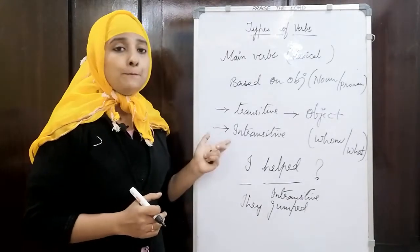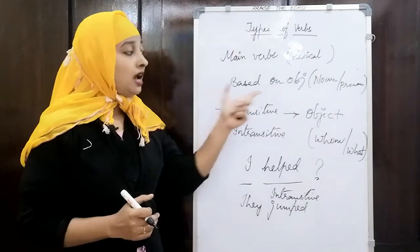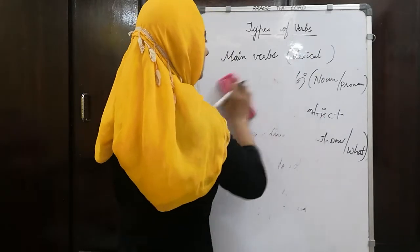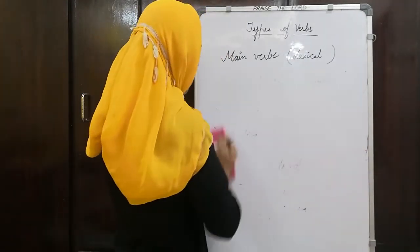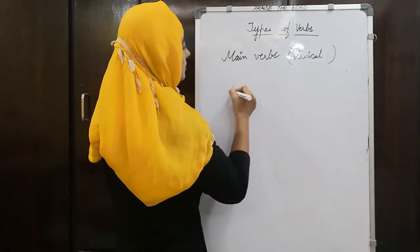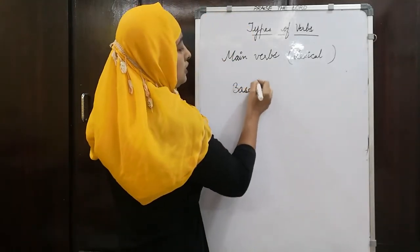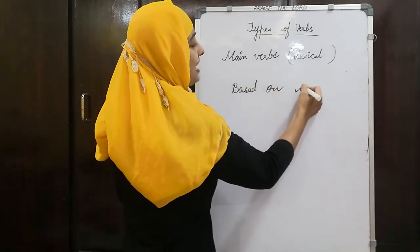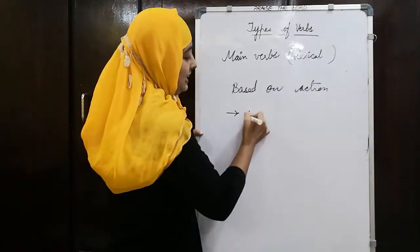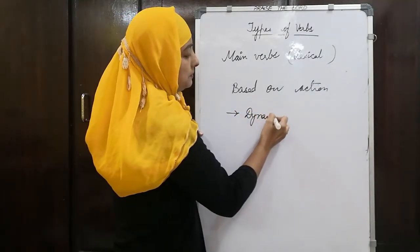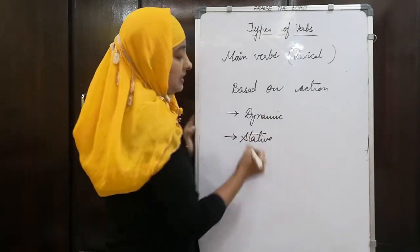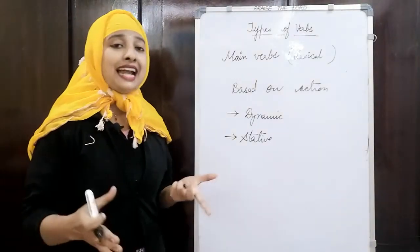So those two — transitive and intransitive — are main verb types based on the object. The next category is based on action. They can be dynamic or stative.